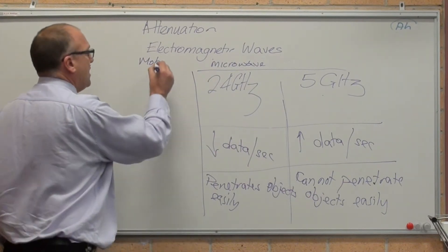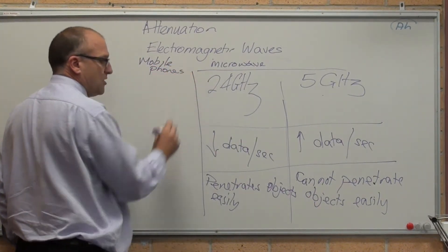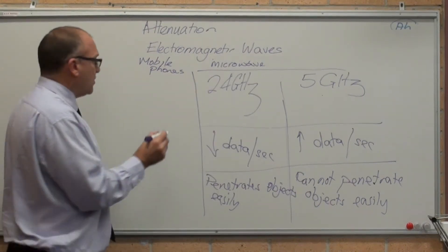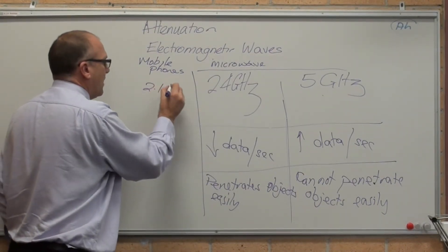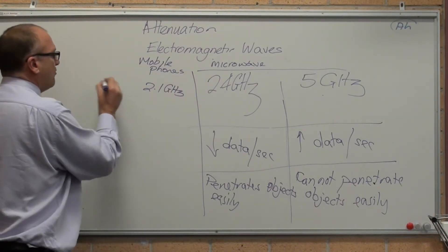Let's keep coming down, your mobile phones. In Australia, they work at a range of frequencies, 2.1 GHz, down to 700 MHz.